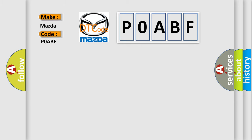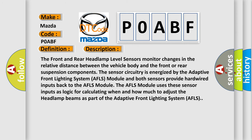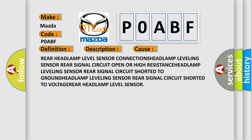For Mazda car manufacturers, the basic definition is: signal of rear axle sensor — invalid electrical error, signal invalid. The front and rear headlamp level sensors monitor changes in the relative distance between the vehicle body and the front or rear suspension components. The sensor circuitry is energized by the adaptive front lighting system (AFLS) module. The AFLS module uses these sensor inputs to calculate when and how much to adjust the headlamp beams. This diagnostic error occurs most often in cases involving the rear headlamp level sensor connections or the headlamp leveling sensor rear signal circuit being open.